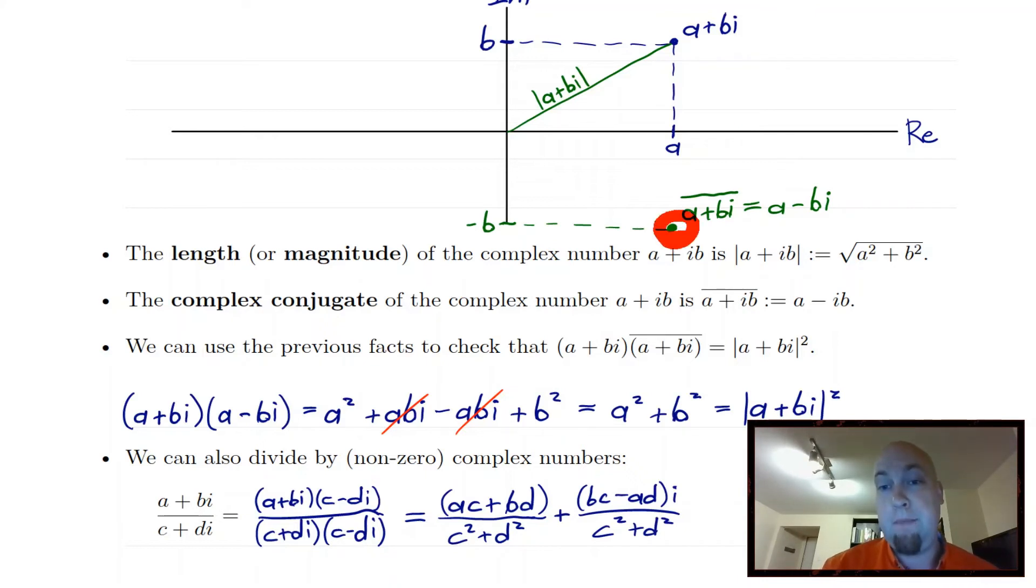And the complex conjugate of a minus bi, again, you reflect it through the x-axis, it would be back up at a plus bi. So it's just sort of this reflection and the complex conjugate of the complex conjugate just brings you back to where you started. All right. And the reason that we introduced the complex conjugate at all, it's just because we can express lots of other interesting operations in terms of it.